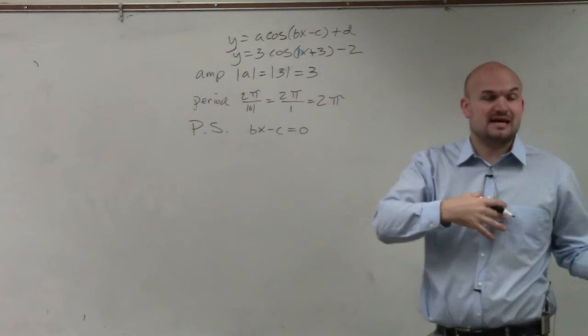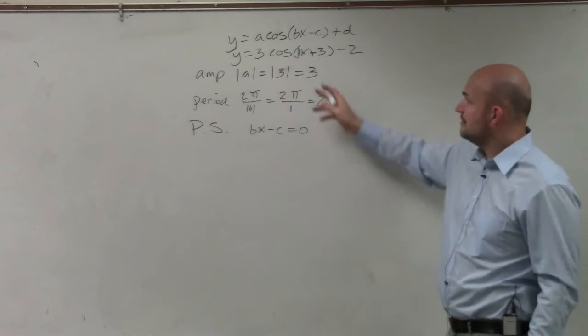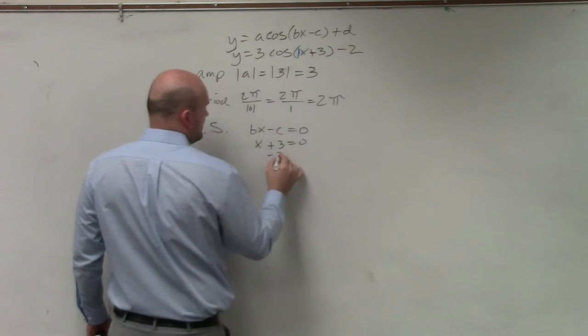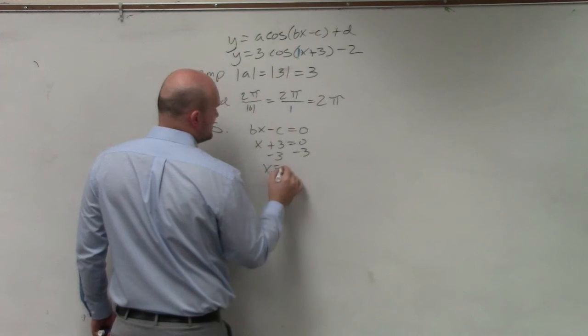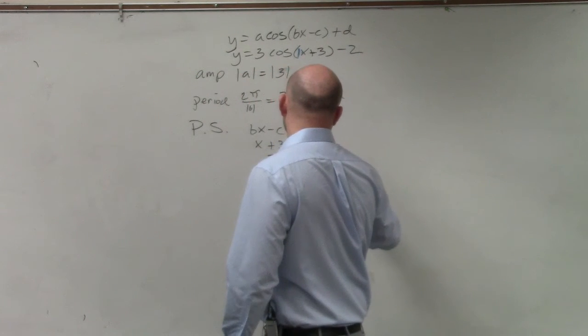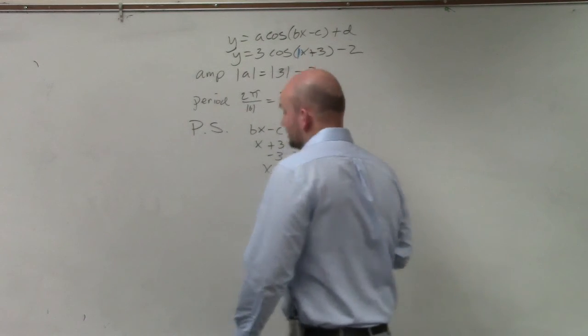But I'll show you in the next example where you'd make a mistake. But in this case, if you just followed my advice, x plus 3 equals 0, minus 3, minus 3, x equals negative 3. So therefore, you're shifting left 3 units.